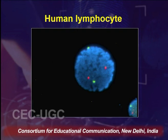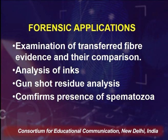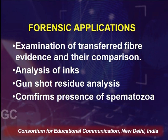Apart from that, the microscope also comprises objective lens and ocular lens. The objective lens is the main microscopic lens used to magnify tiny objects, and the ocular lens — also known as the eyepiece lens — is the part a user looks through to see a magnified image. A human lymphocyte can be observed giving its autofluorescence under the fluorescence microscope. Forensic implications of fluorescence microscopy include examination of transferred fiber evidence, analysis of inks, GSR analysis, and confirming the presence of spermatozoa.